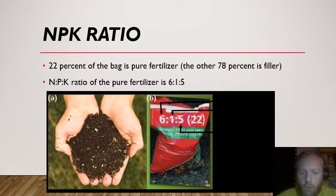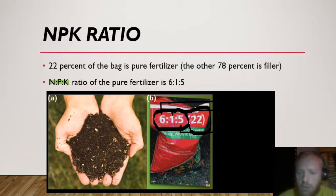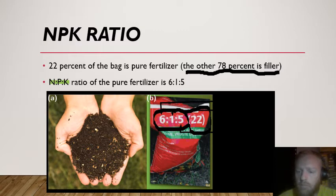On a bag of fertilizer, you will always see the NPK ratio — for example, 6:1:5. The 6 is for nitrogen, the 1 is for phosphorus, and the 5 is for potassium. You will also see a number in brackets — in this case, 22. This means that 22% of this bag of fertilizer is actual pure fertilizer; the other 78% is just filler. The filler is there to dilute the fertilizer, because it is not good for the plant to take in pure fertilizer — it will actually poison the plant — so it needs to be diluted.